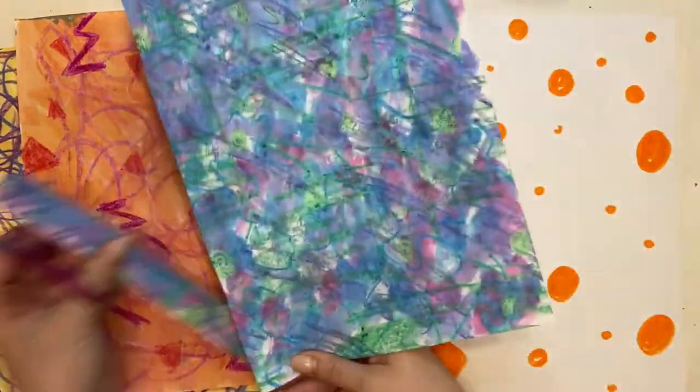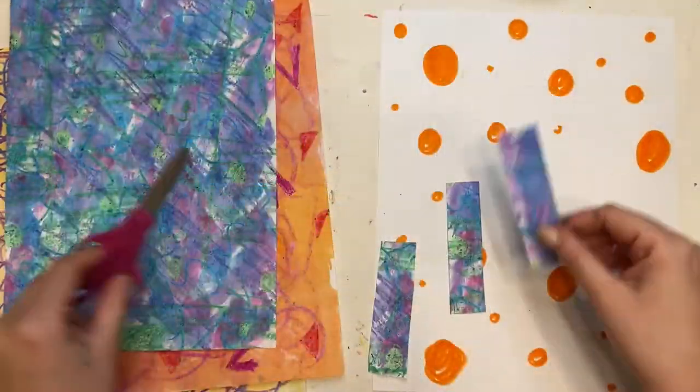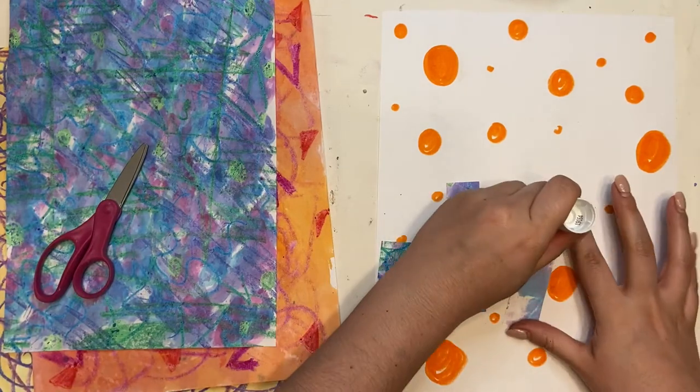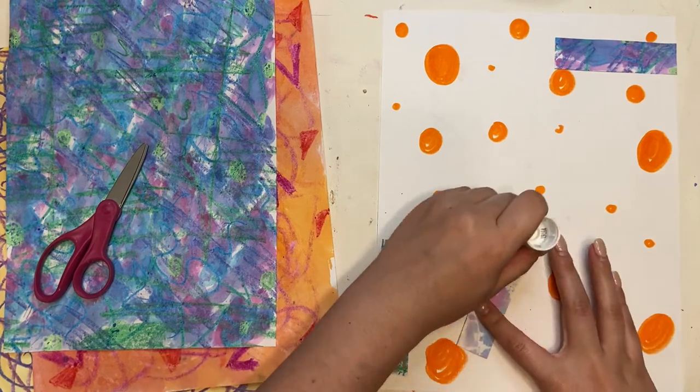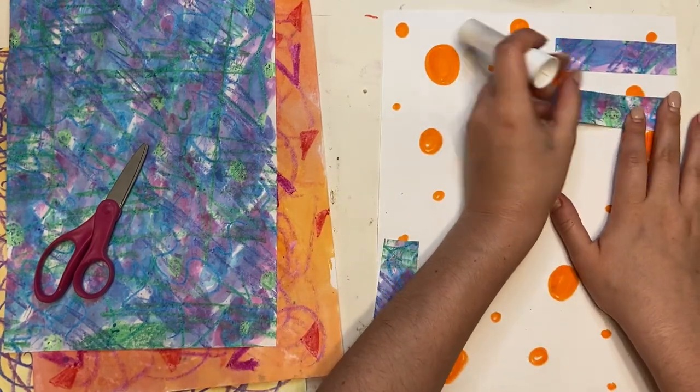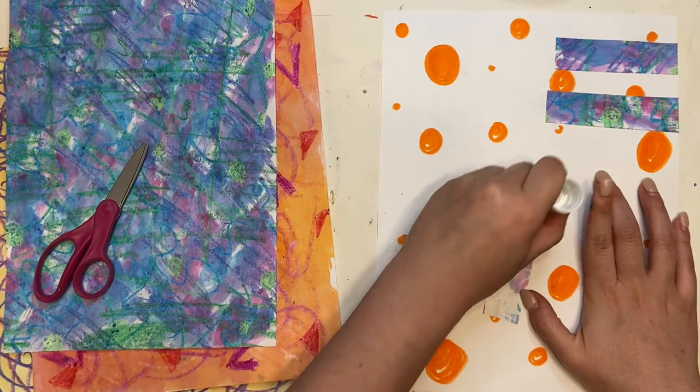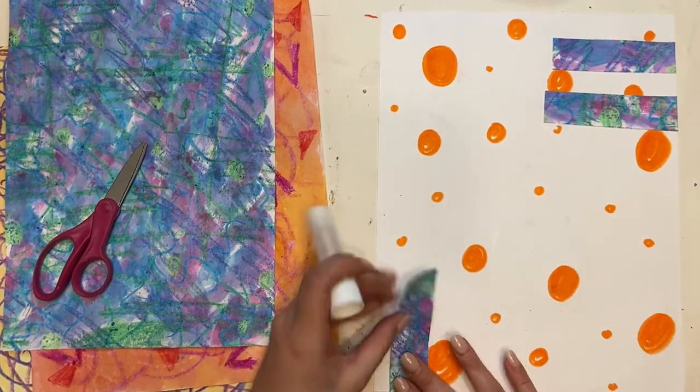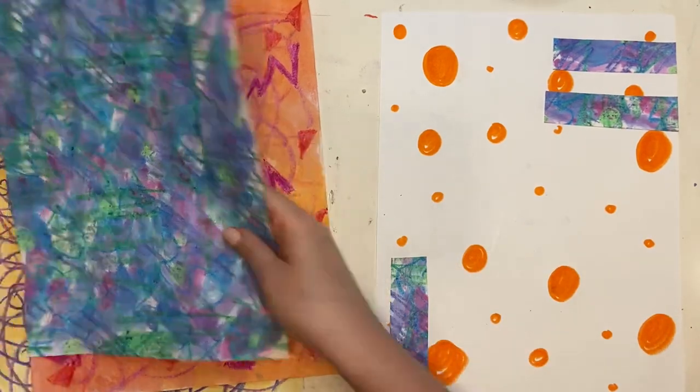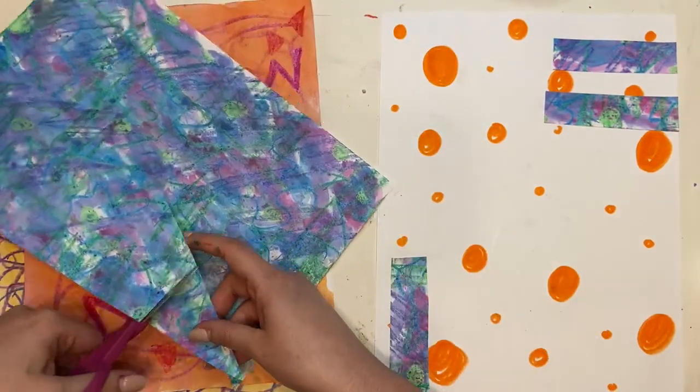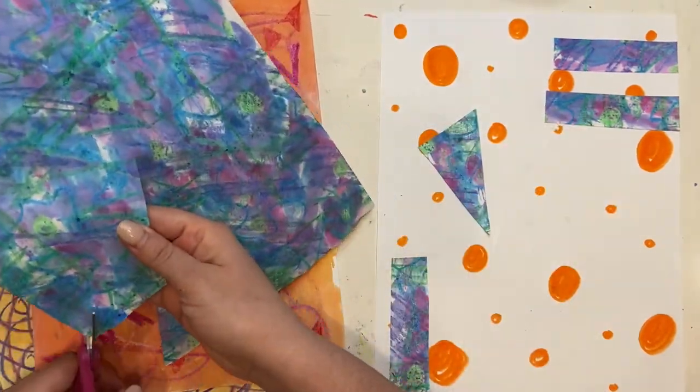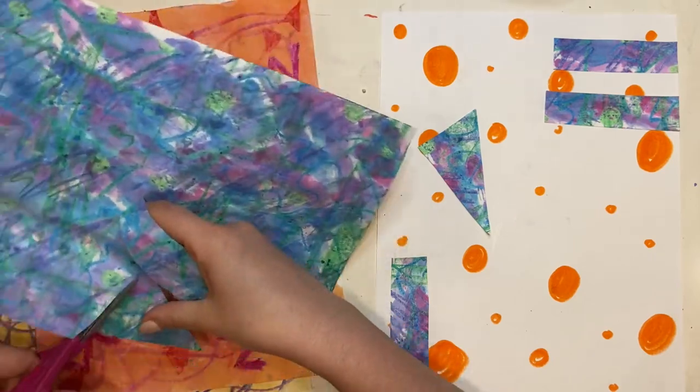Then you're gonna start using your painted paper or your magazines or whatever you have and start putting it on to your background. Don't worry too much about the design or the shapes. Just start applying as you go. And I'm just kind of cutting, making shapes with my paper, and I'm just gonna see where it takes me.